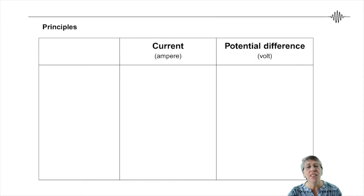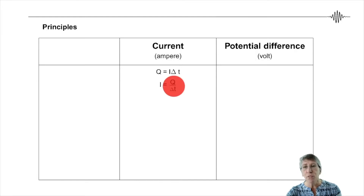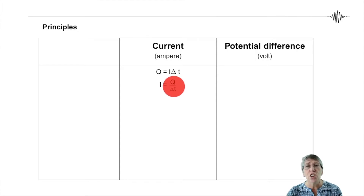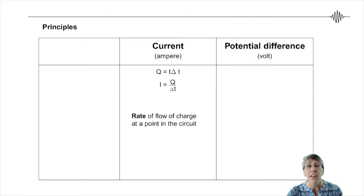First, we're going to look at current and potential difference, because you need to know the difference. When I look at current, I want to refer to your information sheet, where you have the equation Q equals I times delta T. We want to rewrite that to become I equals Q over delta T. Q is for charge in Coulombs, and T is time. So current is the amount of charge in Coulombs traveling through a point in one second — that is, the rate of flow of charge at a point in the circuit.